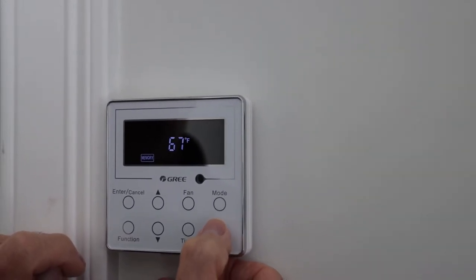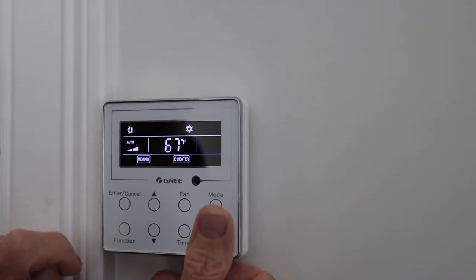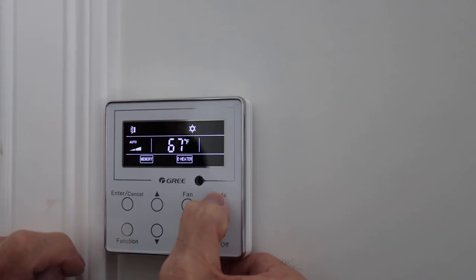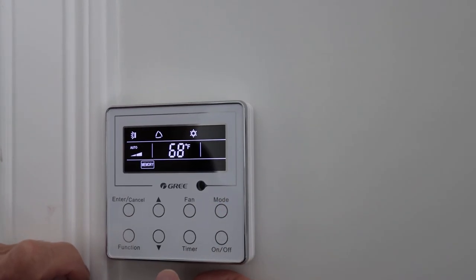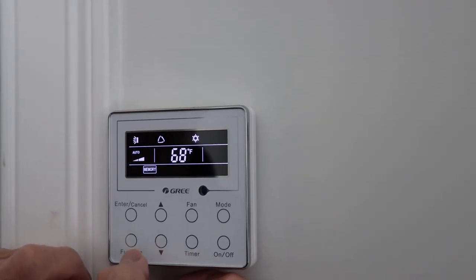Now we want to turn it back on. And now we want to hit our mode button once to get out of the e-heater mode and just into the regular heat mode. And that's it.